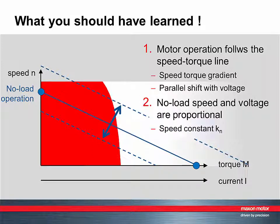The no-load speed and voltage are proportional. Proportionality between the two is given by the speed constant, KN.